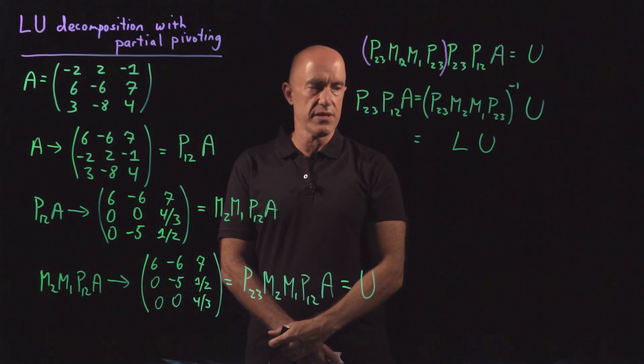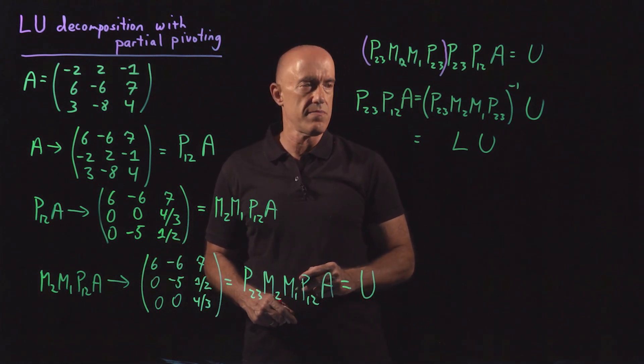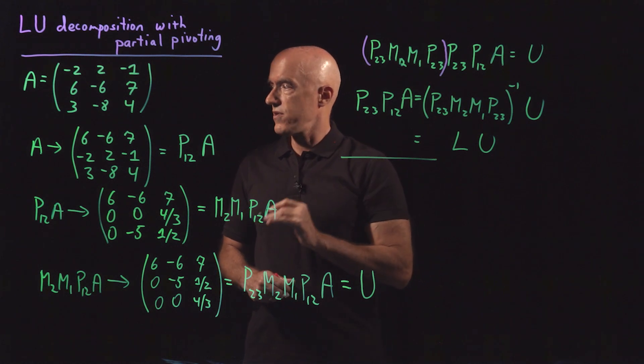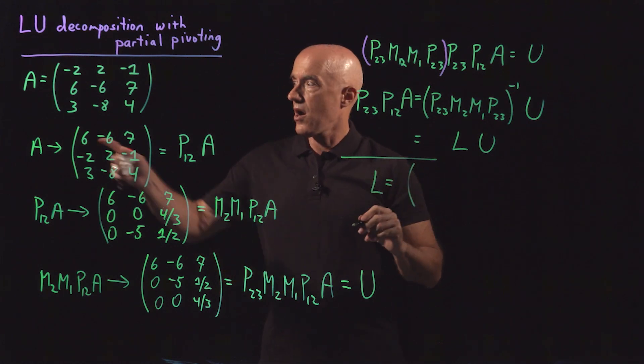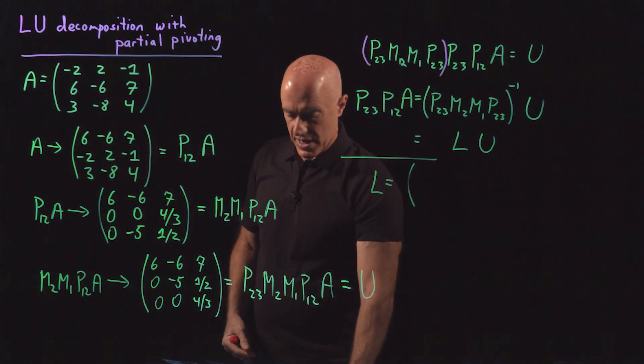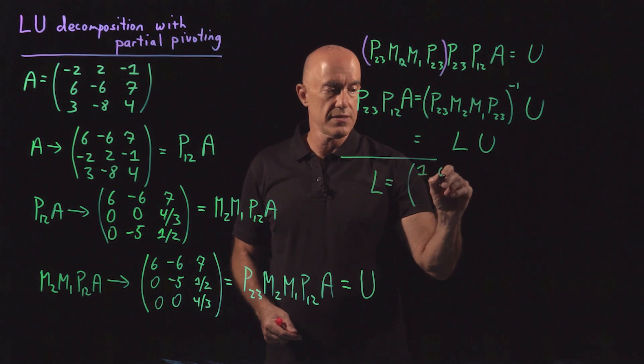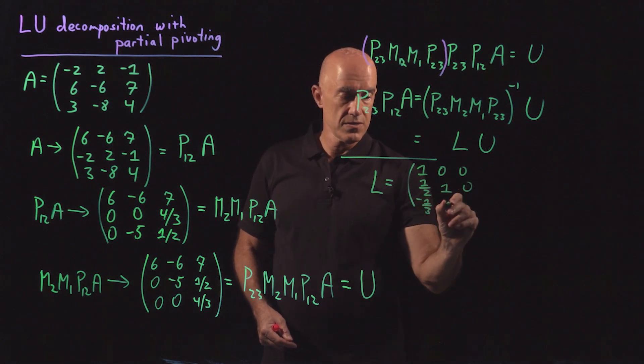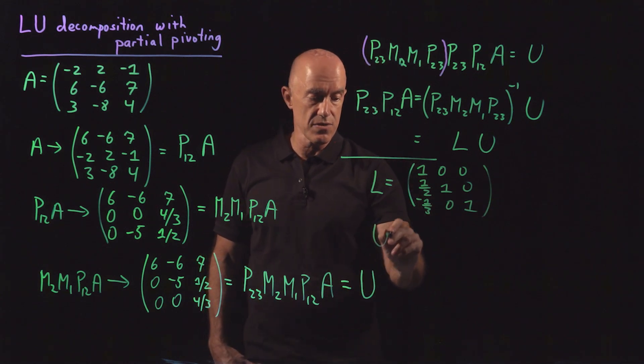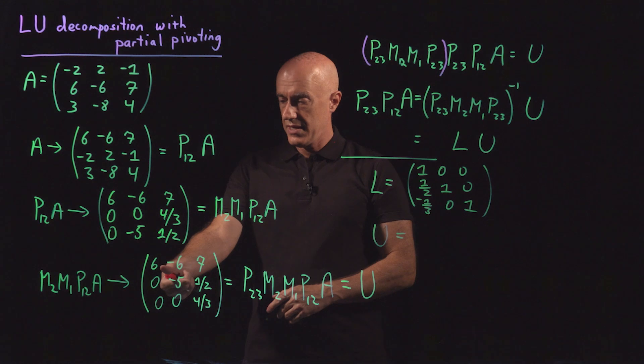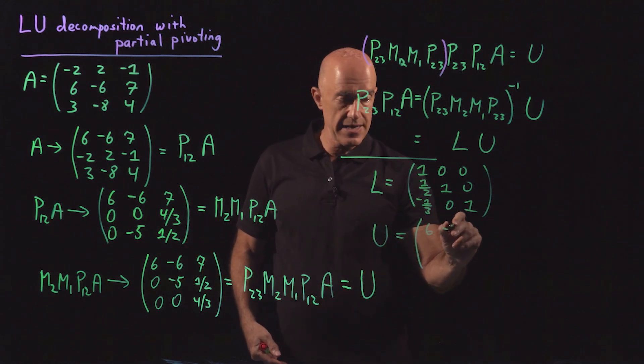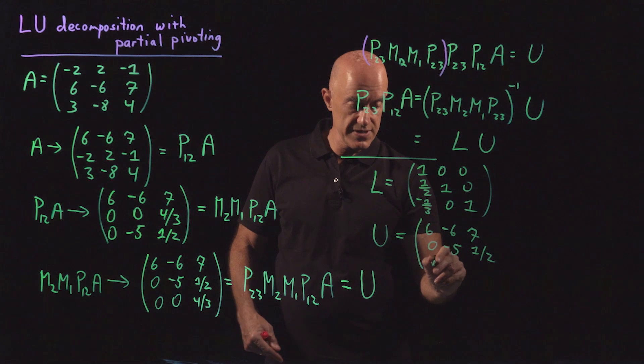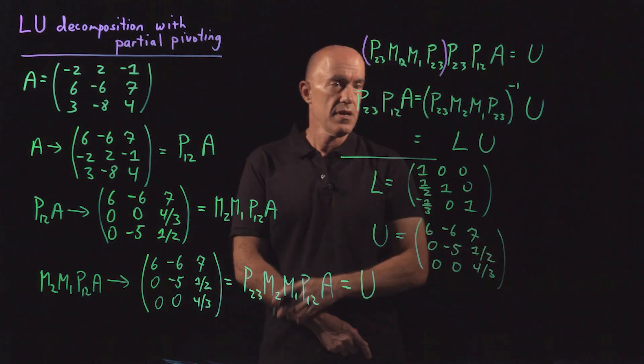This is our lower triangular matrix. I won't go through the matrix algebra on the board, but you can look at my notes or you can do it on your own. And then what you find is that this lower triangular matrix, then, are the multipliers that we used to do Gaussian elimination. It's 1, 0, 0, 0, 1 half, 1, 0, and minus 1 third, 0, 1. Our upper triangular matrix we already have on the board is this one, is our 6, minus 6, 7, 0, minus 5, 1 half, and 0, 0, 4 thirds. That's our LU decomposition.